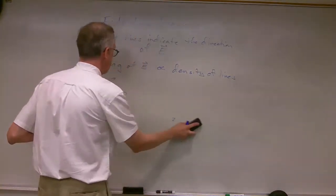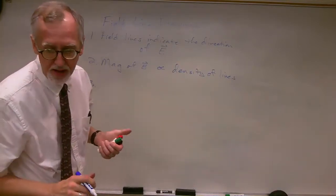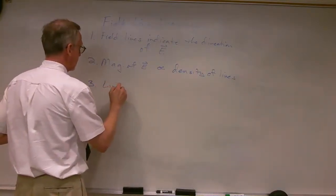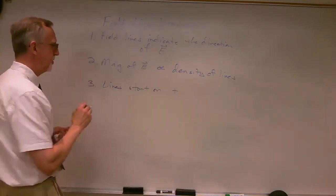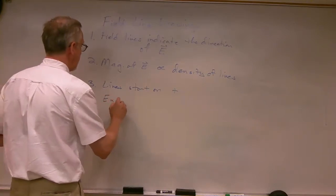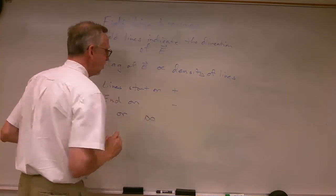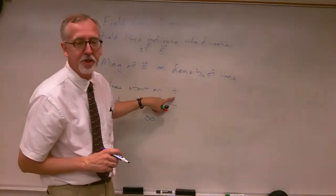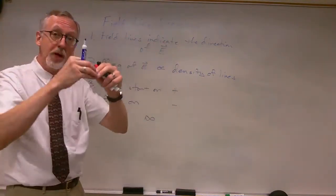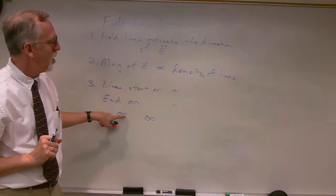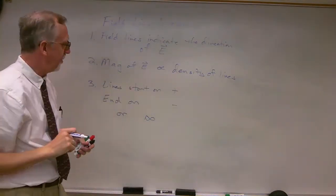And then one more point: the lines start on positive charges and end on negative charges or infinity. So typically if you have a positive charge, lines will start there and go out. If you have a negative charge, lines will go into the negative charge, or you can have lines that go out to infinity or that come in from infinity.